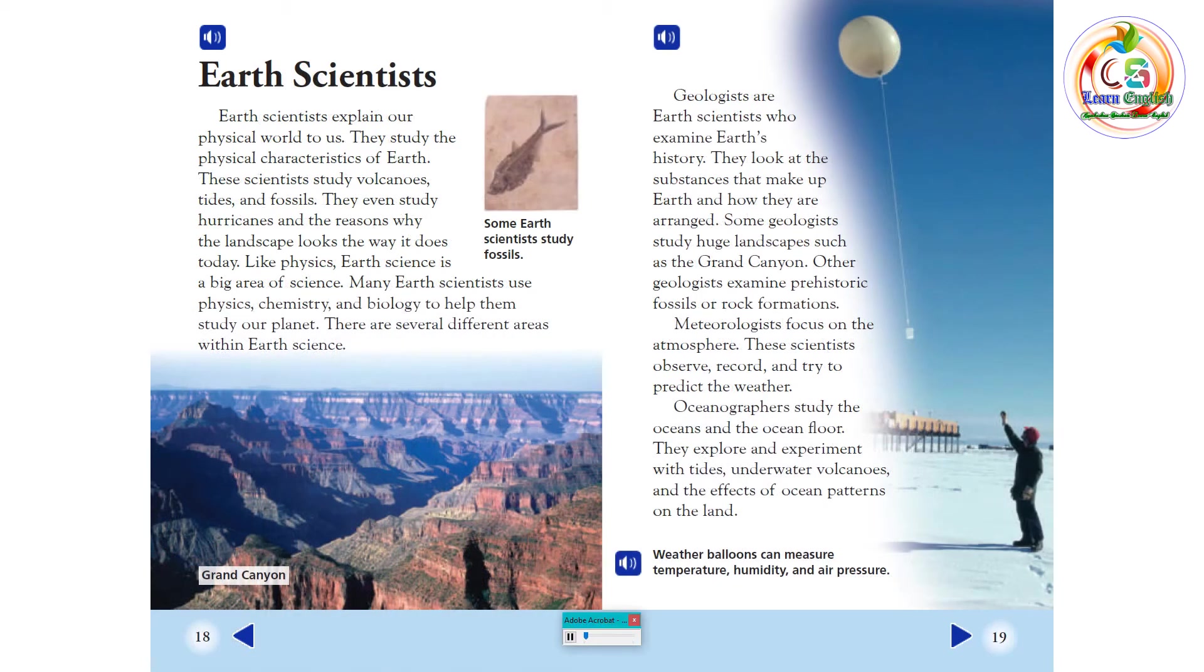Earth Scientists. Earth scientists explain our physical world to us. They study the physical characteristics of Earth. These scientists study volcanoes, tides, and fossils. They even study hurricanes and the reasons why the landscape looks the way it does today. Like physics, Earth science is a big area of science. Many Earth scientists use physics, chemistry, and biology to help them study our planet. There are several different areas within Earth science.